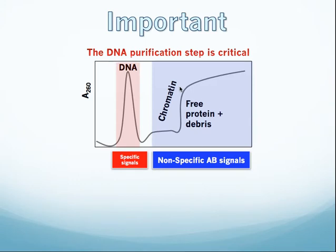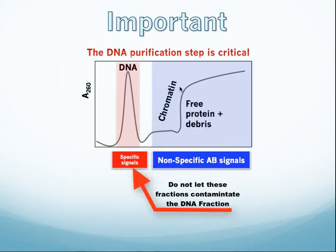The procedure critically depends on obtaining high-purity DNA from the cesium gradient. Because there's such a huge excess of debris and free protein and membranous material at the top of the gradient, you want to take extra caution to ensure that this material does not cross-contaminate into the DNA fraction.